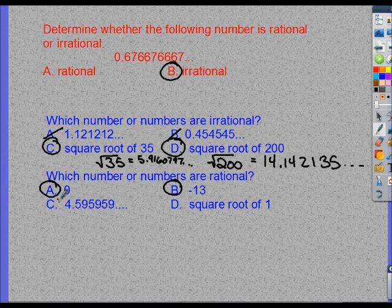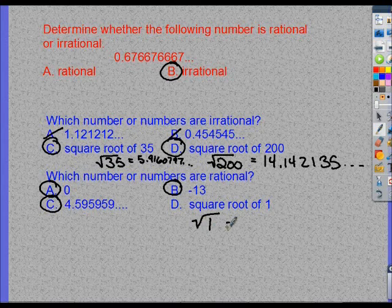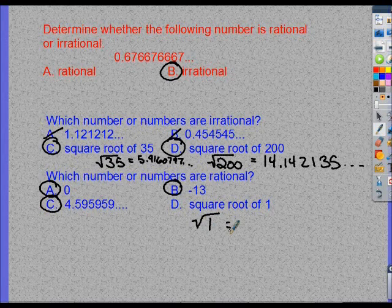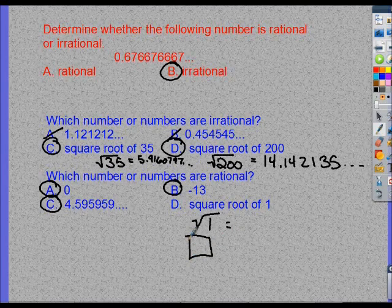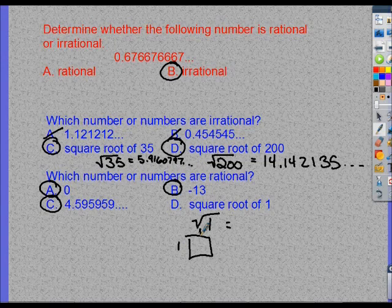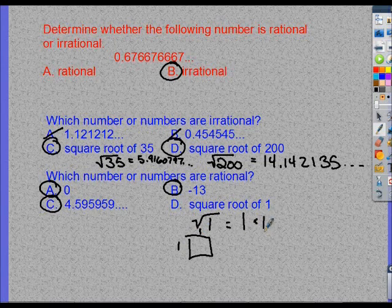We got 4.595959, so that repeats. We got square root of 1. Remember, square root just means what times itself equals 1. So if I was to draw a box, it has 1 unit in it. So this is 1 down, 1 across. So that means square root of 1 is 1 because 1 times 1 equals 1.